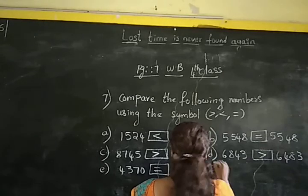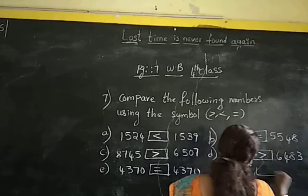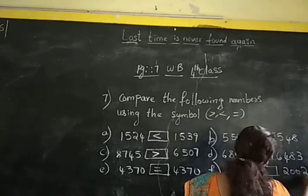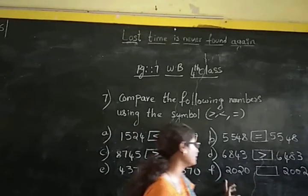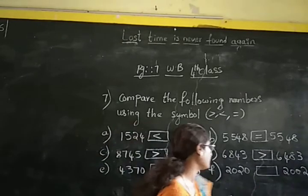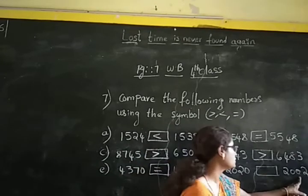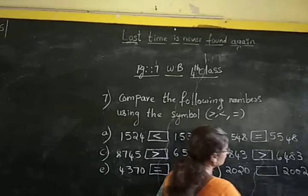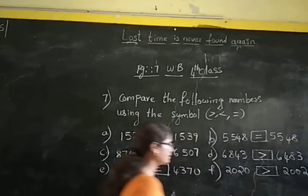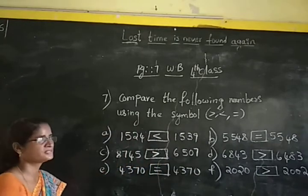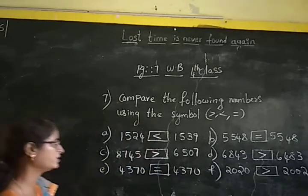Next: 2,020 and 2,002. Both numbers have 2 in thousands place and 0 in hundreds place. In tens place, the first number has 2 and the second has 0. Since 2 is bigger than 0, we put the symbol greater than — because 2,020 is greater than 2,002.